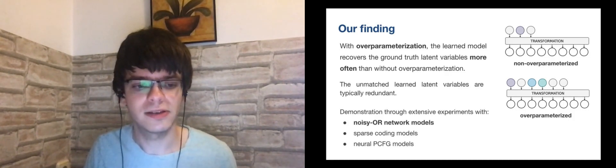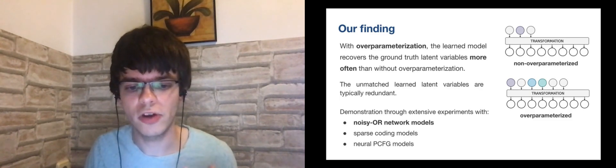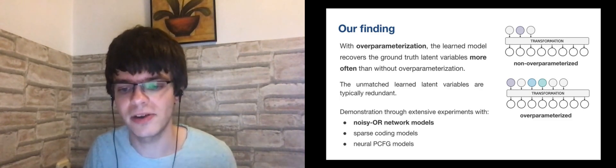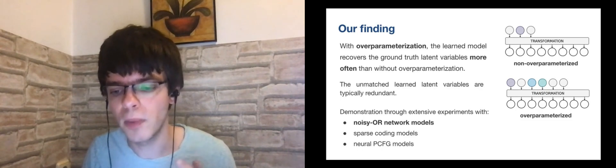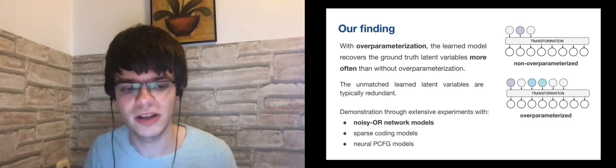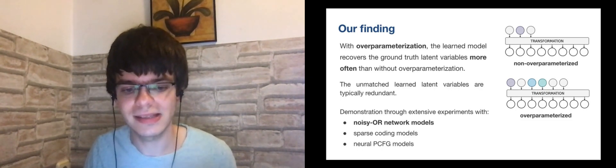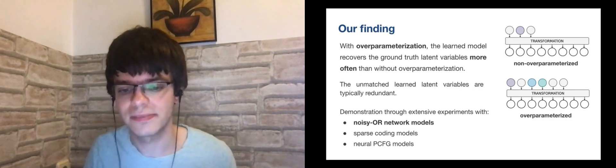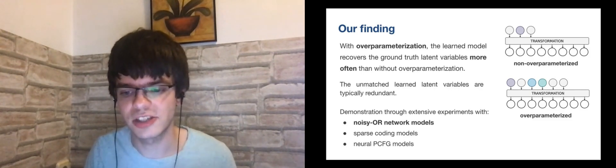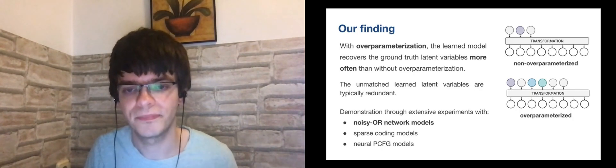In our paper, we demonstrate this benefit of overparameterization through extensive experiments with noisy OR network models, sparse coding models, and neural probabilistic context-free grammar models. In the rest of this presentation, we will focus mostly on noisy OR networks.